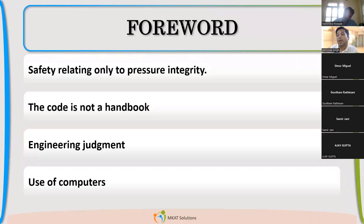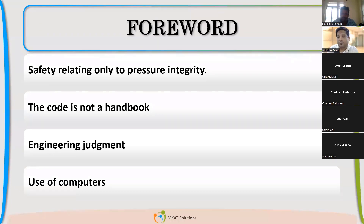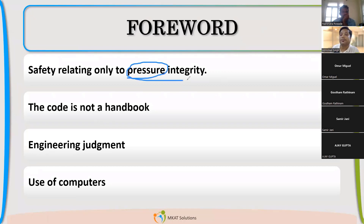Now we are at the forward. If you have the code with you, please open it and try to read the forward. If you read the code very carefully, see the first statement — it's talking about the code being related to safety, relating only to pressure integrity. There are lots of different loadings: pressure, temperature, wind, seismic, piping loads, equipment loads, platforms, ladders. But ASME Section 8 Division 1 is focused on pressure integrity.